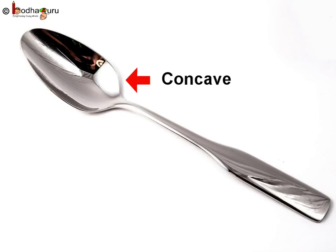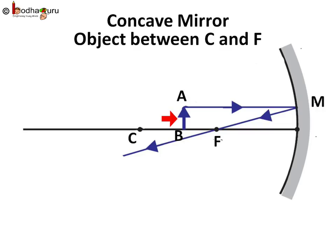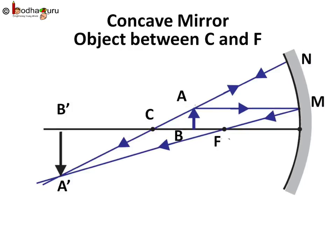You can use a shiny steel spoon—its concave surface acts as a concave mirror. Now there is an object AB on the principal axis between C and F. We follow two light rays coming from point A on object AB: AM and AN.